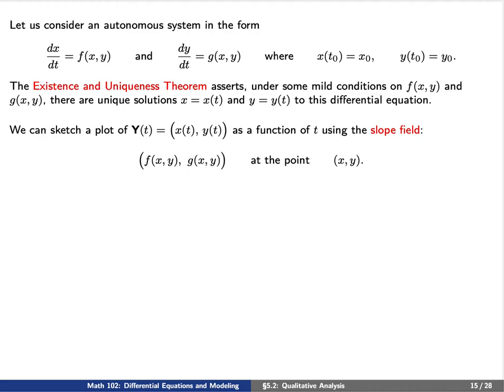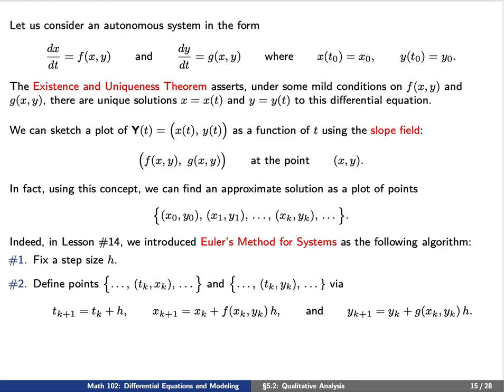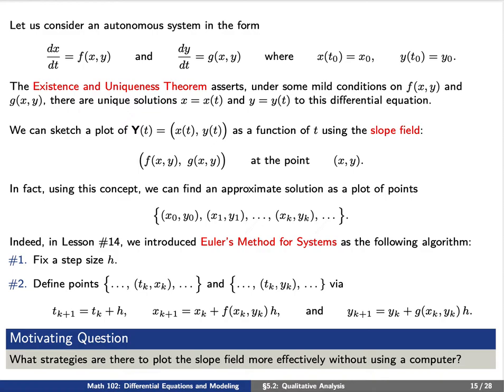Using this concept, we can find an approximate solution as a plot of points x-sub-k, y-sub-k. This is called Euler's method for systems. First, fix a step size h. Second, define points recursively: t-sub-(k+1) is t-sub-k plus h, x-sub-(k+1) is x-sub-k plus f(x-sub-k, y-sub-k) times h, and y-sub-(k+1) is y-sub-k plus g(x-sub-k, y-sub-k) times h. If we know a lot about the slope field, then we can either plot or approximate the solution.